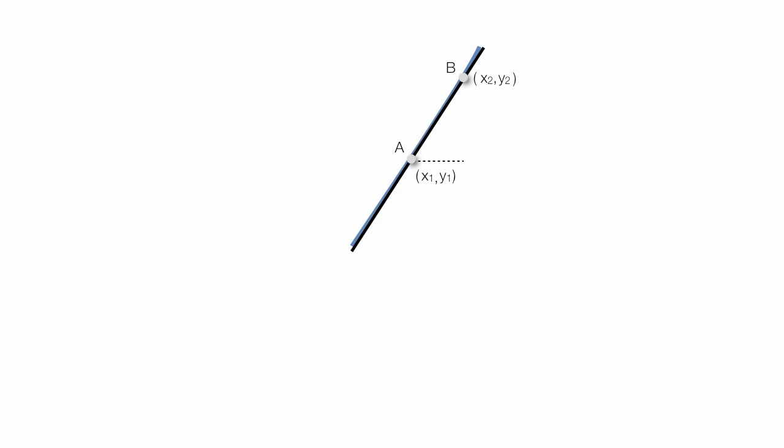Now I can calculate the slope with almost no error. The slope is y2 minus y1 divided by x2 minus x1.